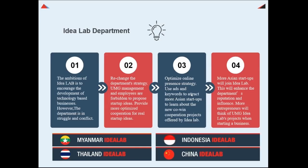For example, we will set up a Google Ads plan. Use ads and keywords to attract more Asian startups to learn about the new collaboration project offered by Idealab UMG. After that, more Asia startups will join Idealab, which will enhance the department's reputation and the influence of UMG. More entrepreneurs will think of UMG Idealab's project when starting a business, so that UMG Idealab will achieve the goal of acquiring 20% of the shares of new startup idea companies.